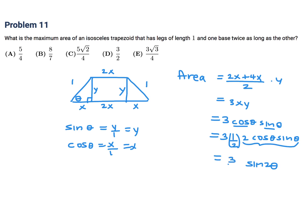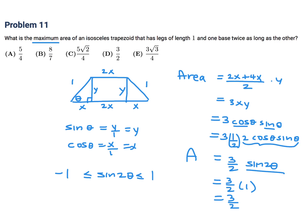Now we go back to the question: what is the maximum? We want to maximize the area, which is three-halves times sin(2θ). The highest sine can ever be is 1, so the maximum value of sin(2θ) is 1, and therefore the maximum area is three-halves. The answer is D.